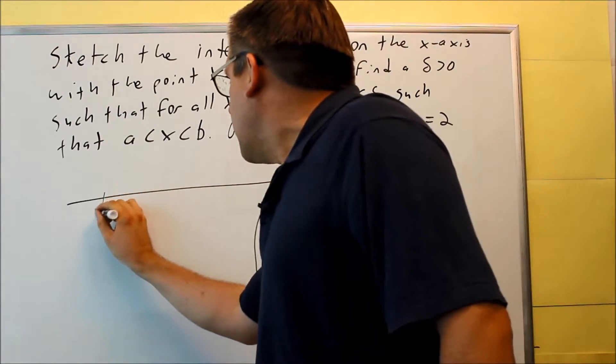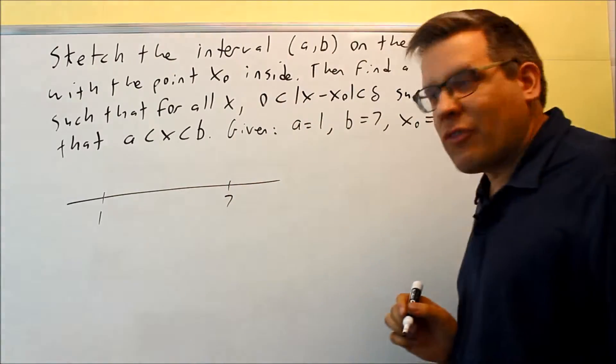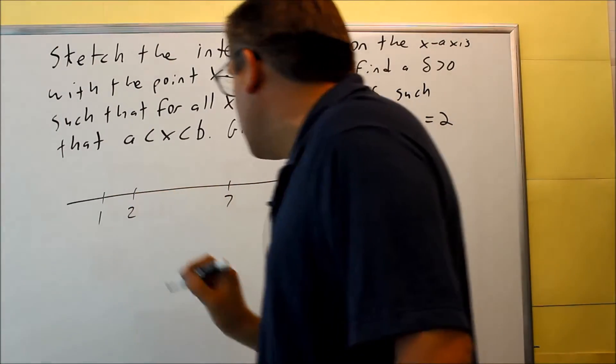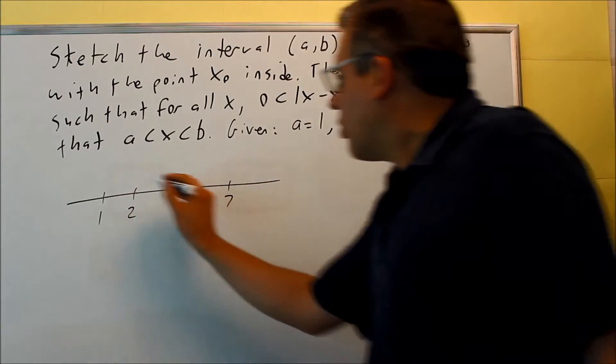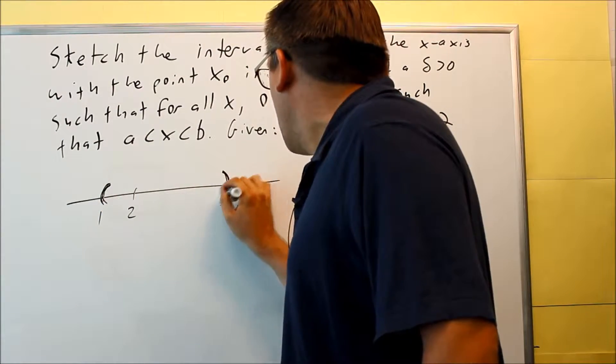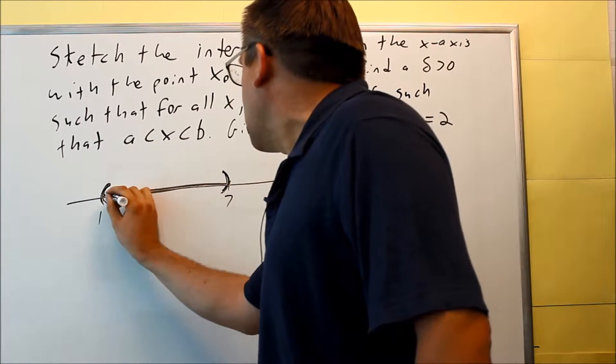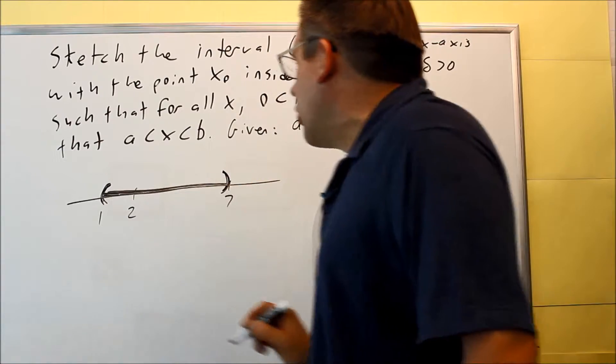And I have, here's my A is 1 over here. We'll start with that. Here's 7. Right here is 2. Okay, your open interval is going to be between 1 and 7. So this is the one right here that they're referring to.